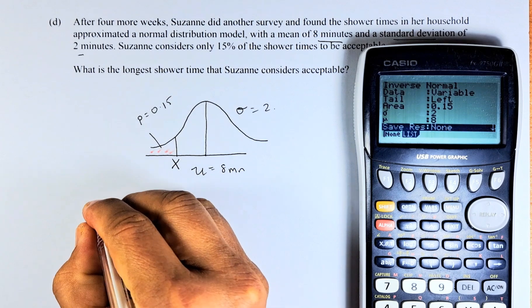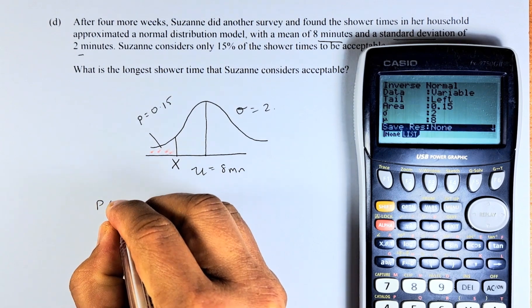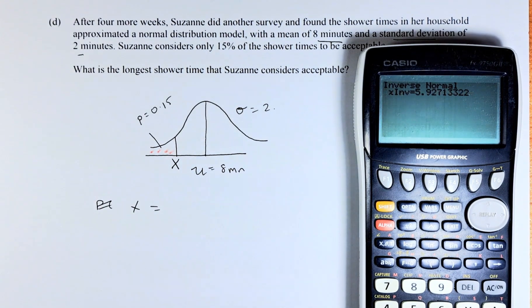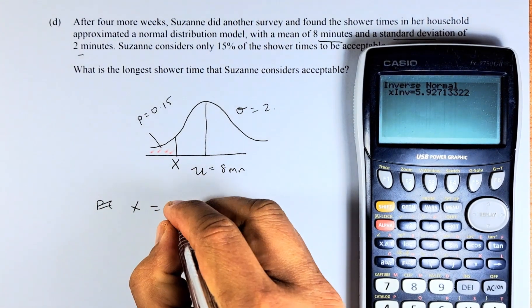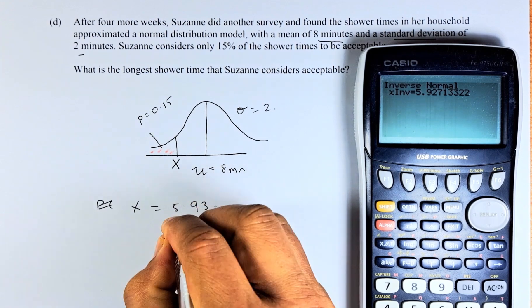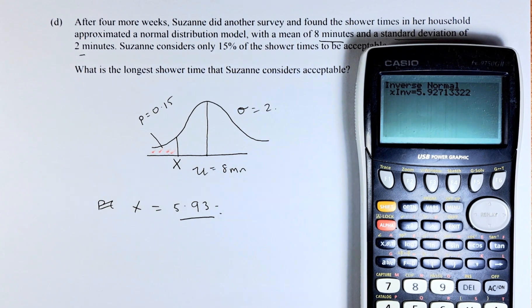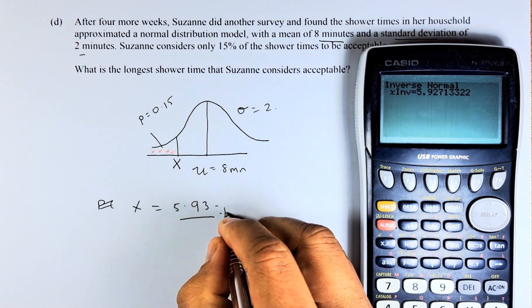The last step we are going to do: probability of X. Just execute it, and the answer is 5.93. So that will answer the longest shower time that Susan considers acceptable is 5.93 minutes.